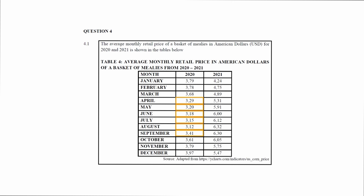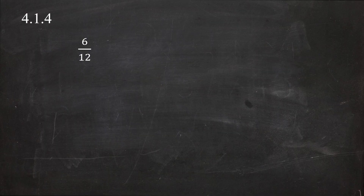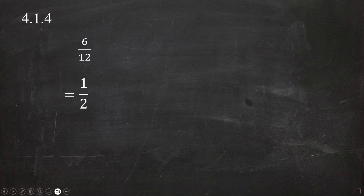There were six months out of the 12 months of the year. As a fraction this is written as 6/12. Dividing both the numerator and denominator by six gives a simplified probability of randomly selecting a month in 2020 where the average retail price was less than $3.50 of 1/2.